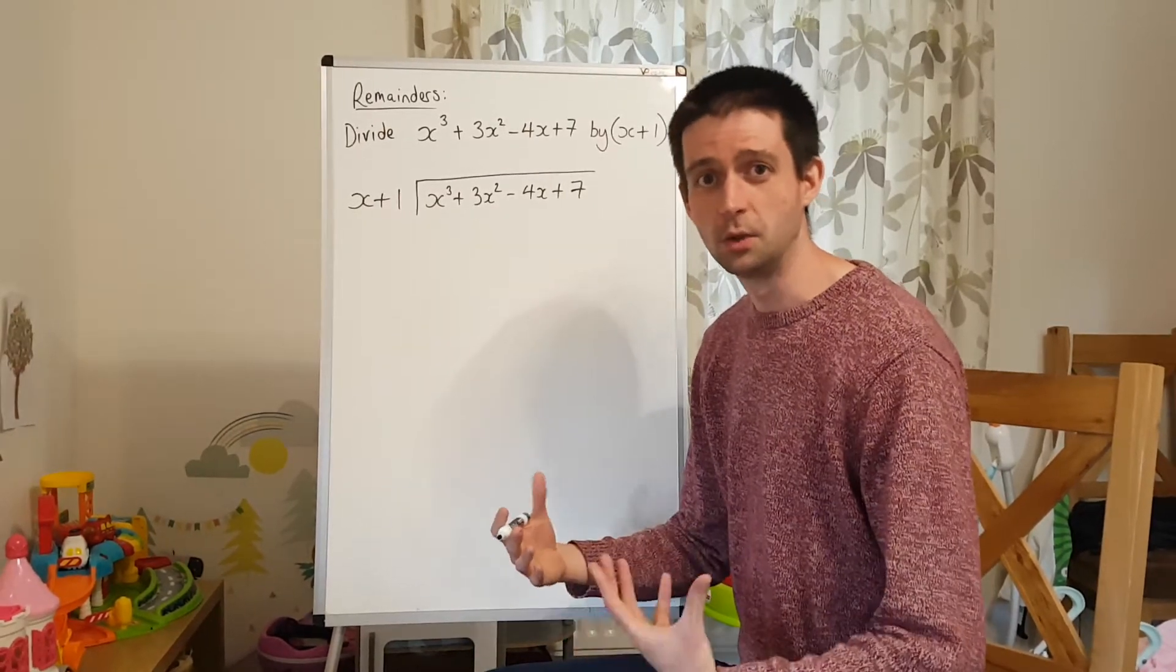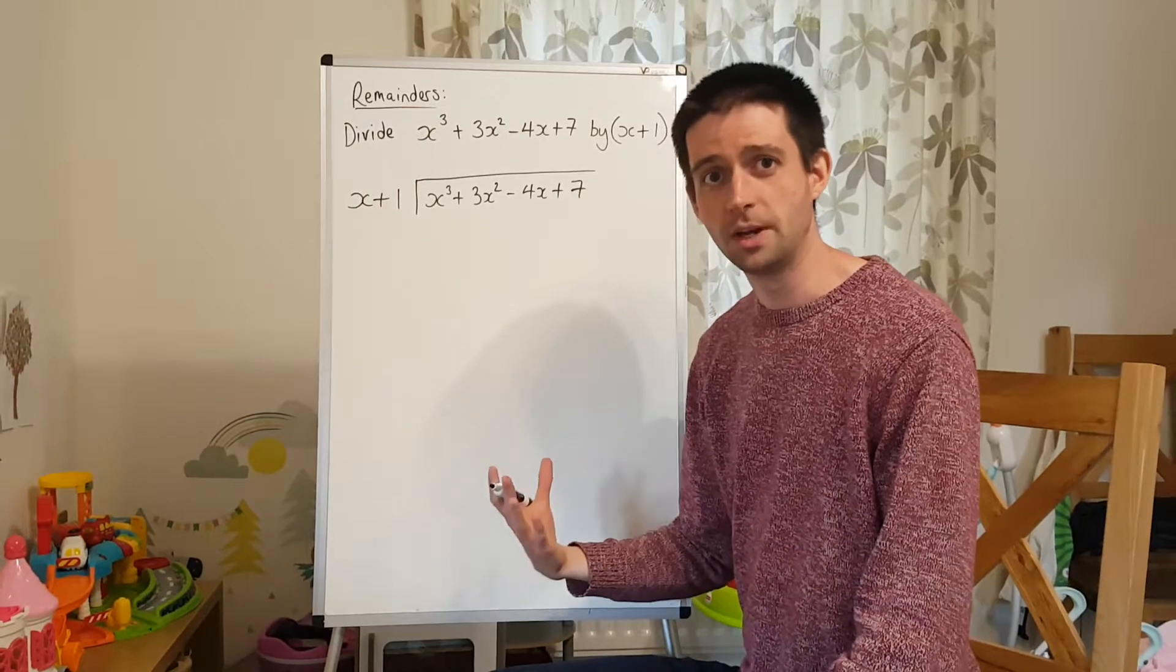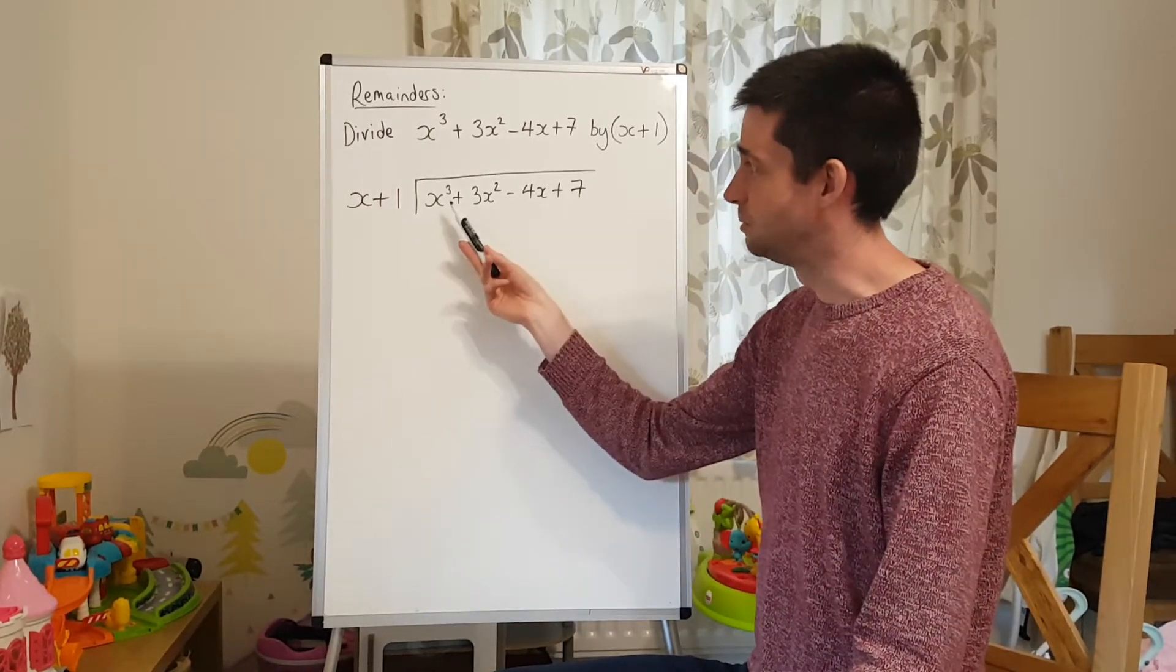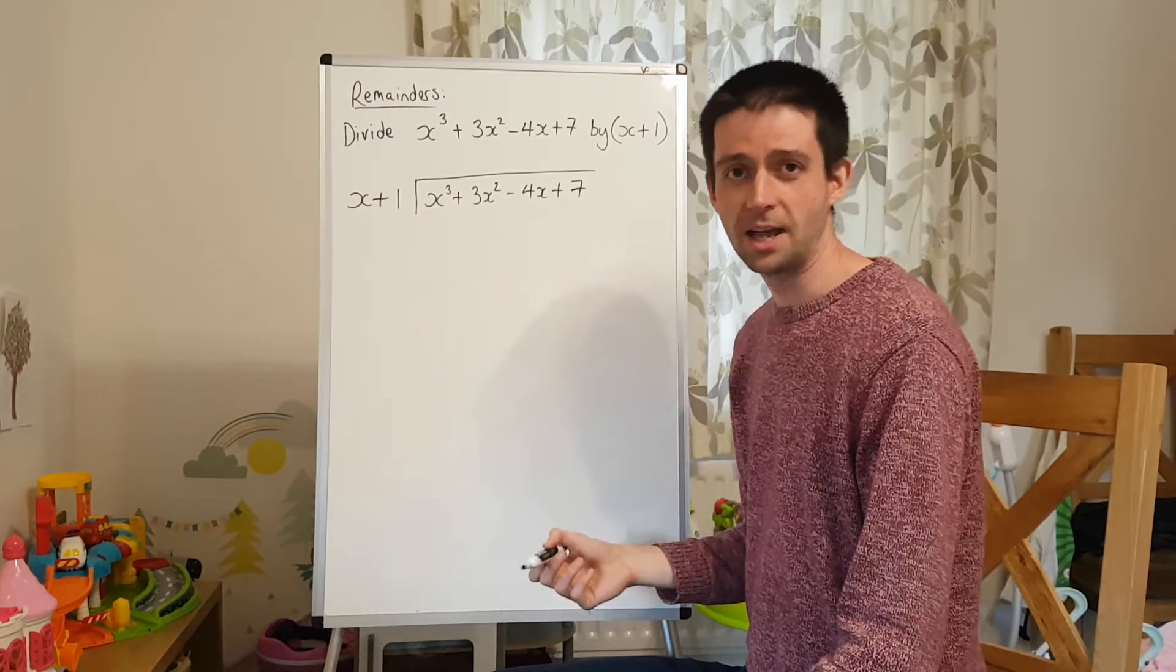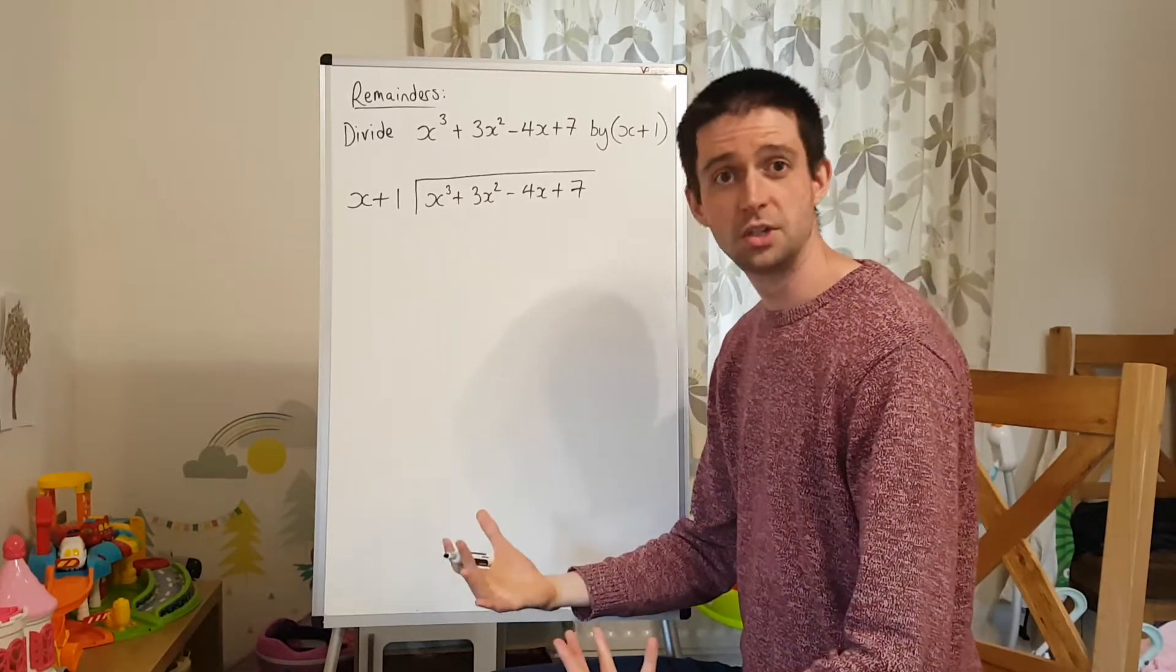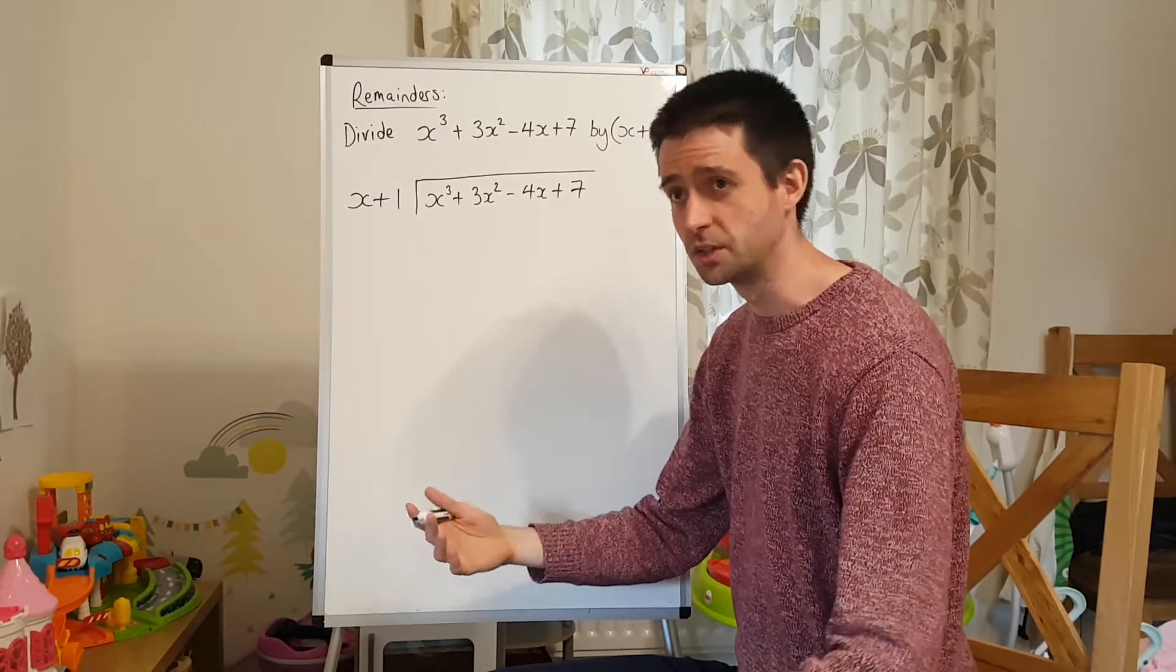So what I'm doing as an example is I'm dividing x cubed plus 3x squared minus 4x plus 7 by x plus 1. The process of algebraic long division is exactly the same as all the previous examples.